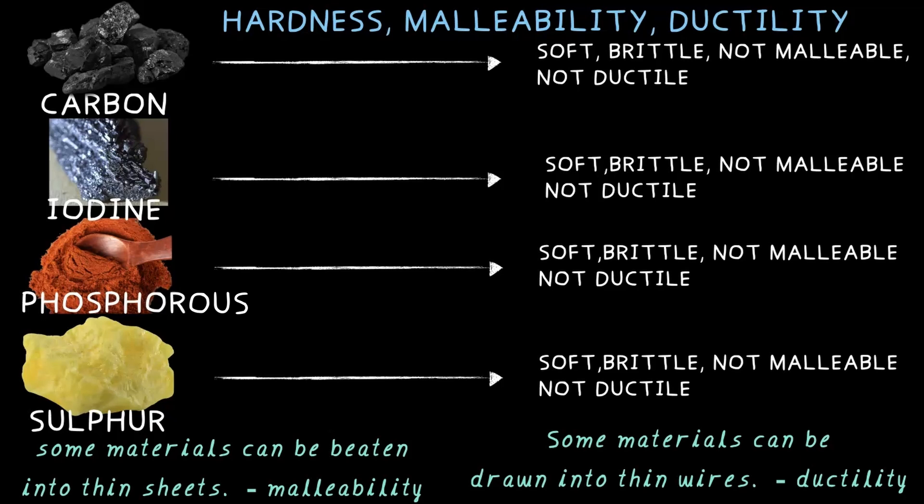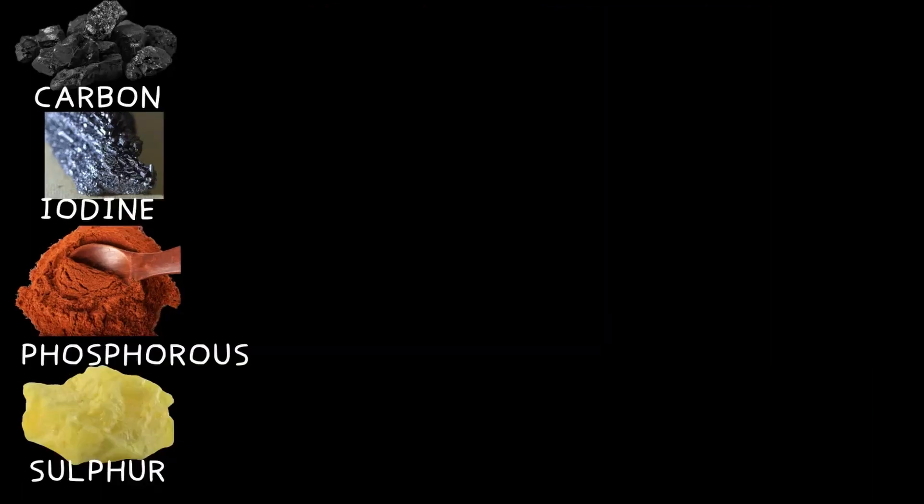But for non-metals in general: soft, brittle, non-malleable, and non-ductile — with a few exceptions. So we've explored these non-metallic properties for carbon, iodine, phosphorus, and sulfur.